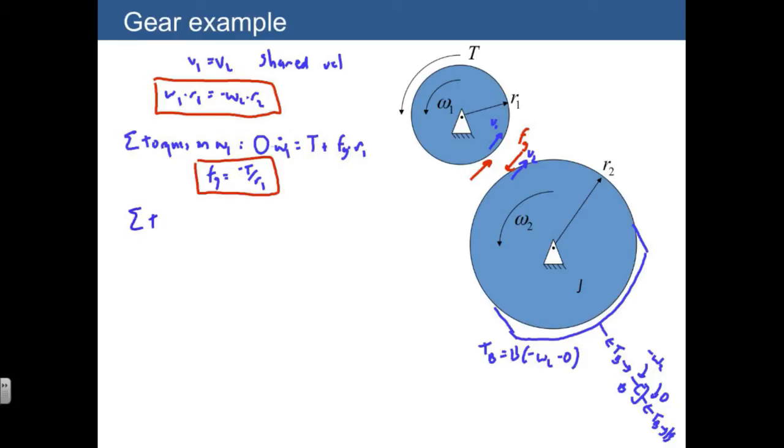Finally, let's sum the torques on omega-2, where we have an inertia J times omega-2 dot is equal to the sum of torques, which is Fg times R2, the moment of the gear reaction force, plus Tb, which is the torque that comes from our rotational damper. If we substitute in, Tb is just negative B omega-2, and to collect terms we get J omega-2 dot plus B omega-2 is equal to Fg times R2.